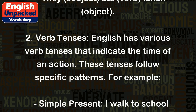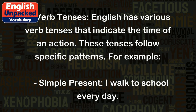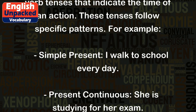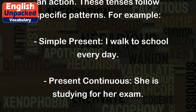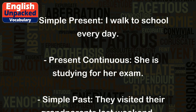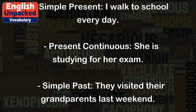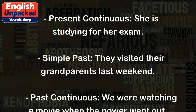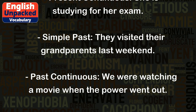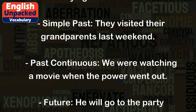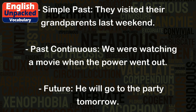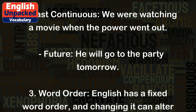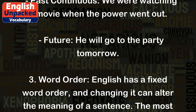2. Verb Tenses. English has various verb tenses that indicate the time of an action. These tenses follow specific patterns. For example: simple present — I walk to school every day. Present continuous — she is studying for her exam. Simple past — they visited their grandparents last weekend. Past continuous — we were watching a movie when the power went out. Future — you will go to the party tomorrow.